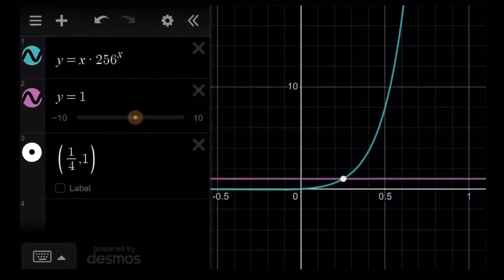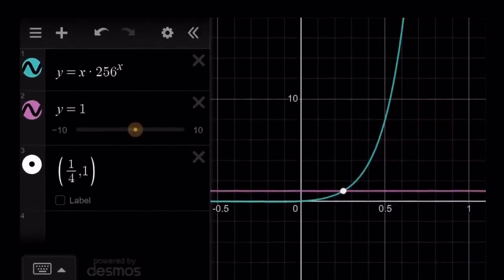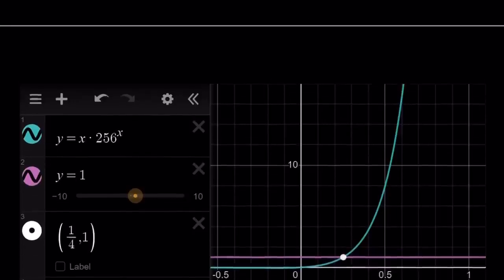So the graph of x times 256 to the power x intersects y equals 1 at a single point. Therefore, there is only one solution. Where does this come from? We came from a different function. Let me explain this a little bit. So if you have x times 256 to the power x, and I'm going to go back to the graph. I don't know why Notability does this sometimes.